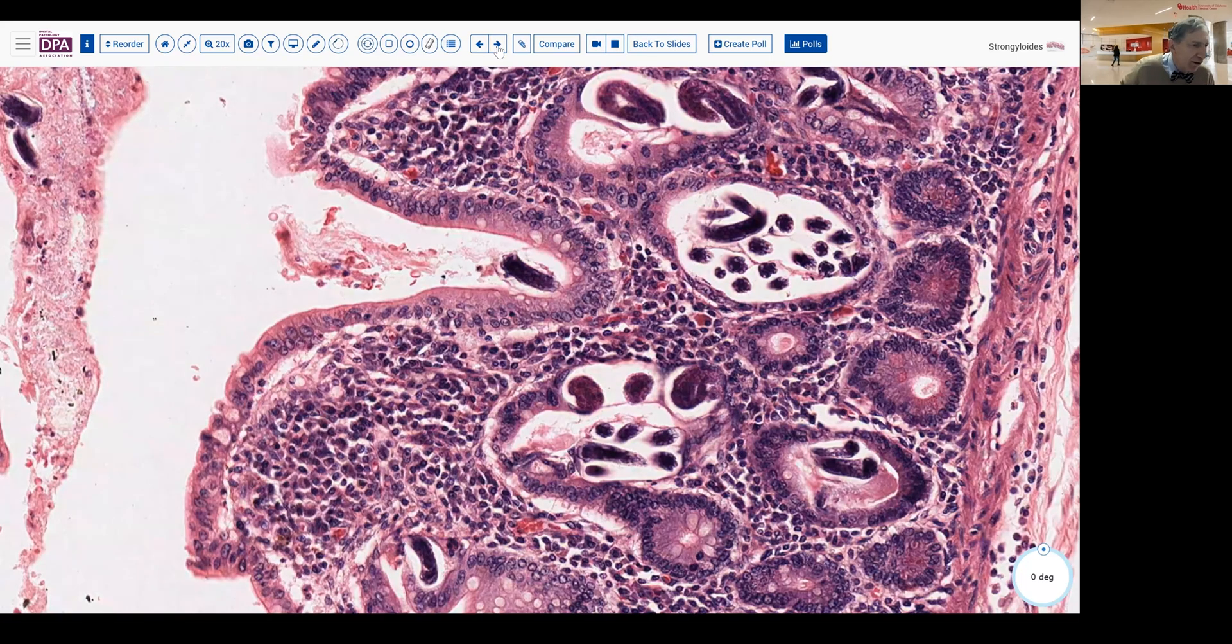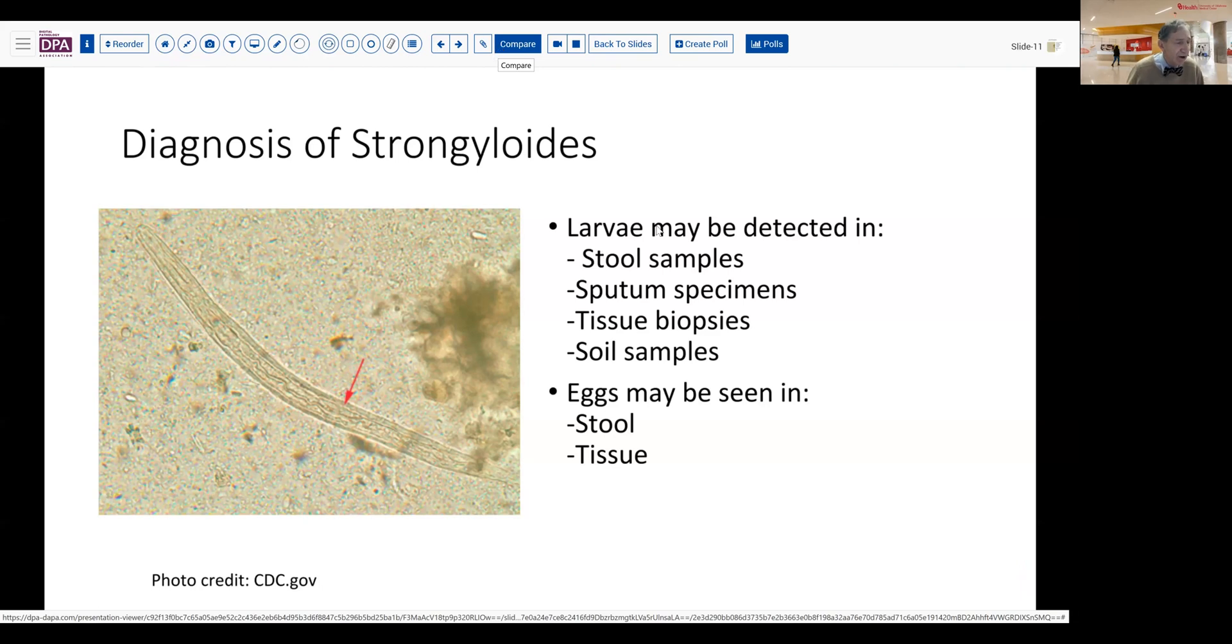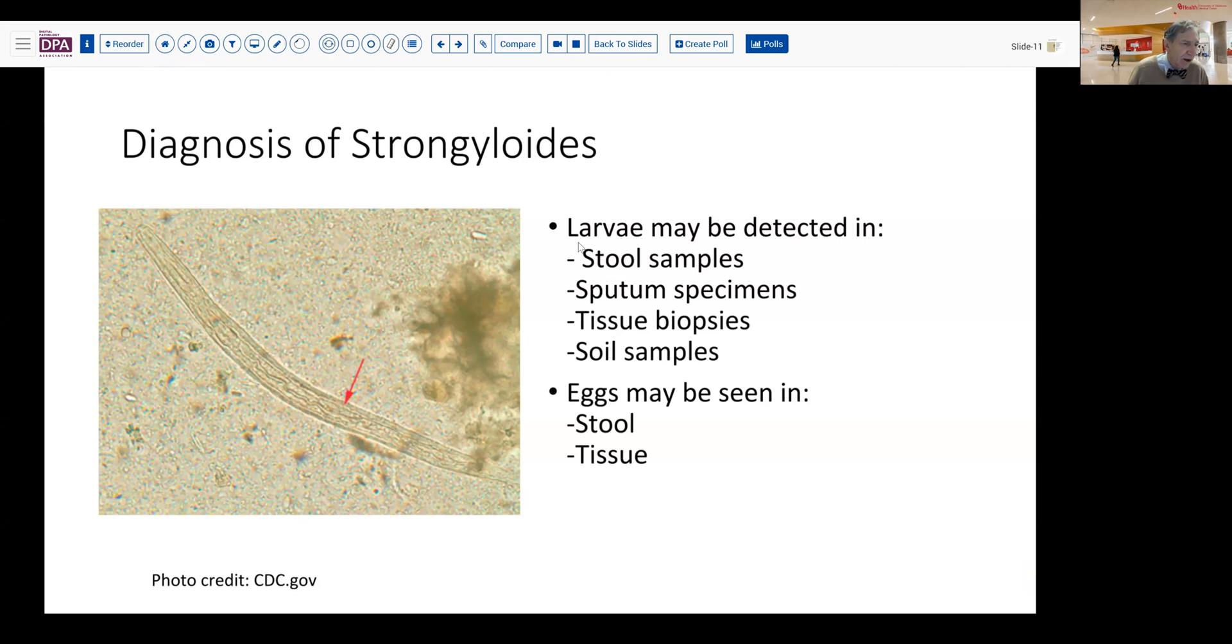Now, because of the life cycle of this organism, finding it in tissue is certainly not an infrequent way. But you can also detect the larvae within stool samples, within sputum samples occasionally, and in endemic areas within soil samples as well. The eggs may be seen on occasion in the stool if the infestation extends fairly distally, as well as in tissue.